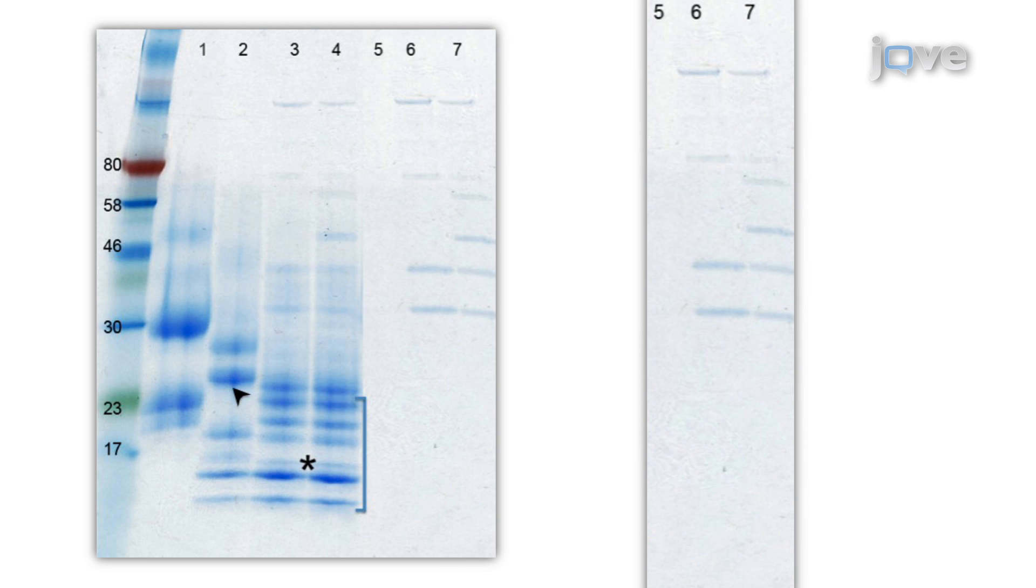Lanes 5 to 7 show the bands corresponding to the glycosidases. Other bands might derive from incomplete deglycosylation or from multiple unidentified proteins present in the HCG-beta sample.